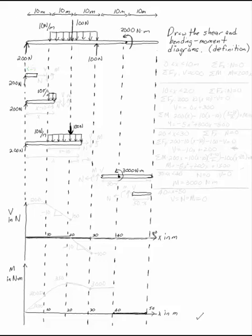Draw the shear and bending moment diagrams from definition for the beam. The beam has a 200 newton load at one end, a distributed load in the middle, with a 100 newton load acting down and a 100 newton load acting up, and this 3000 newton meter moment acting at 40 meters. Notice that this is already a free body diagram. There's nothing here that we need to solve for. There are no external reactions.